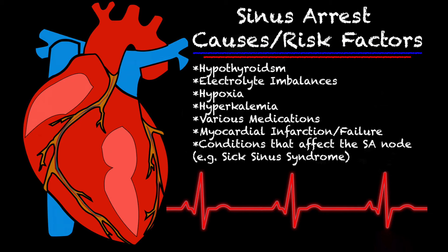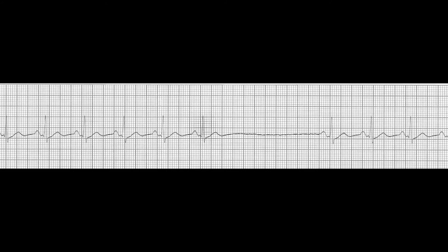Let's take a look at a strip with sinus arrest. Looking at this strip, you'll see that it looks like a very regular rhythm until it hits that part where there's no electrical activity, referred to as sinus arrest. That first beat after the sinus arrest is referred to as the escape beat, and sometimes this beat may not have a P wave — it just depends on what part of the heart the actual beat is coming from. Our SA node is referred to as our pacemaker, and our AV node is referred to as our gatekeeper. The AV node can take over, and there are different points in the heart that can actually take over to compensate for what the SA node isn't doing.